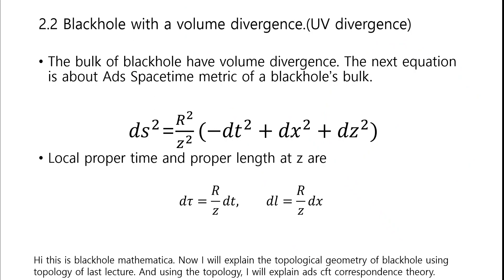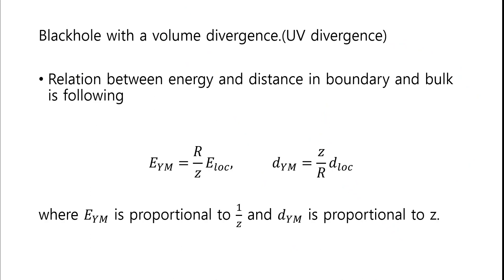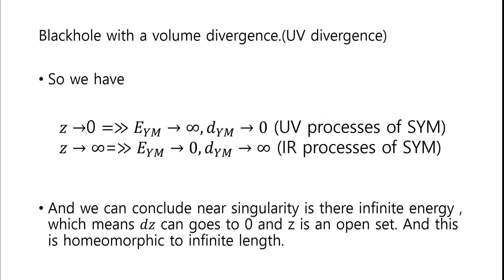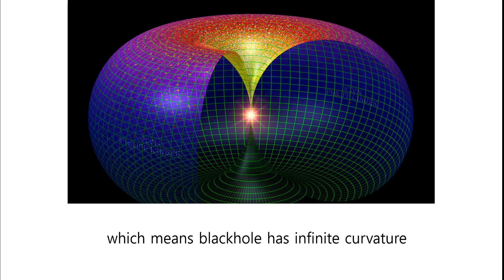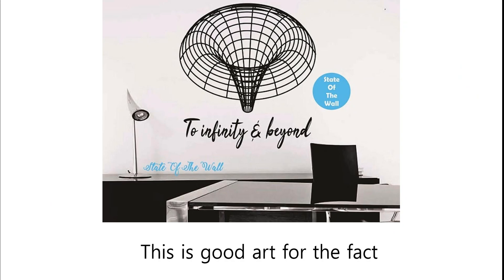The bulk of black hole has volume divergence. The next equation is about the ADS spacetime metric of a black hole's bulk. The local proper time and proper length at Z are like this. The relation between energy and distance in boundary and bulk is as follows: Yang-Mills energy is proportional to 1/Z, and distance in Yang-Mills is proportional to Z. So we have UV divergence and IR divergence, and we can conclude near singular distance means infinite energy, which means Z can go to 0. Z is its opposite, and this is homeomorphic to infinite length. So we showed UV divergence, which means the black hole has infinite curvature.